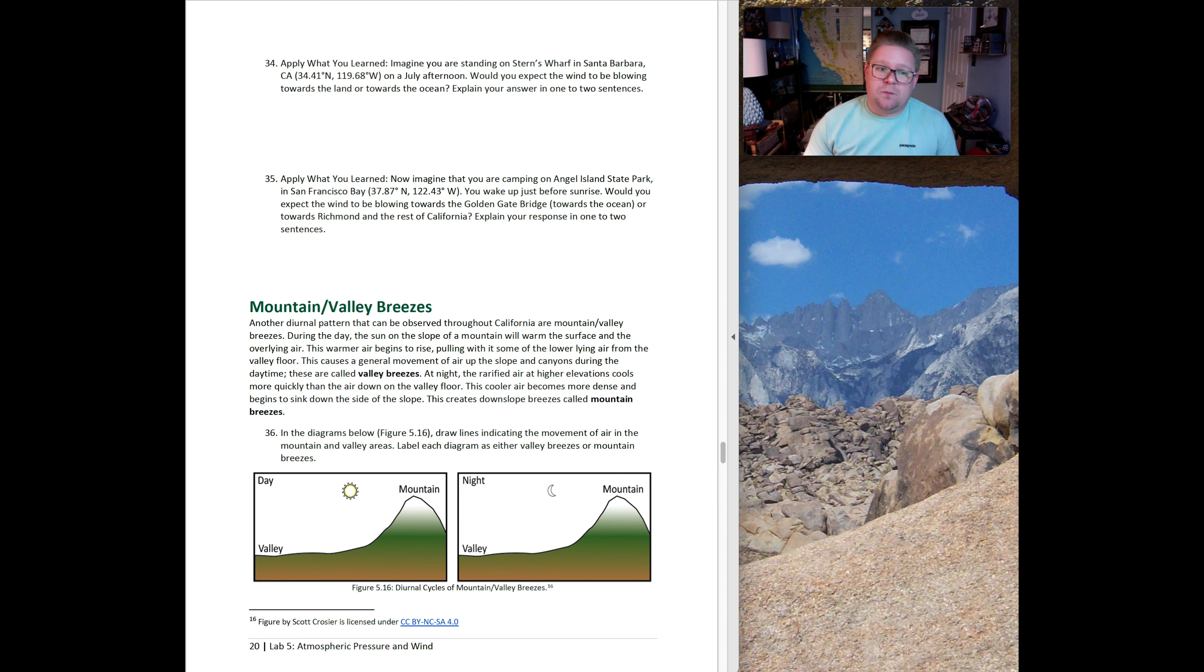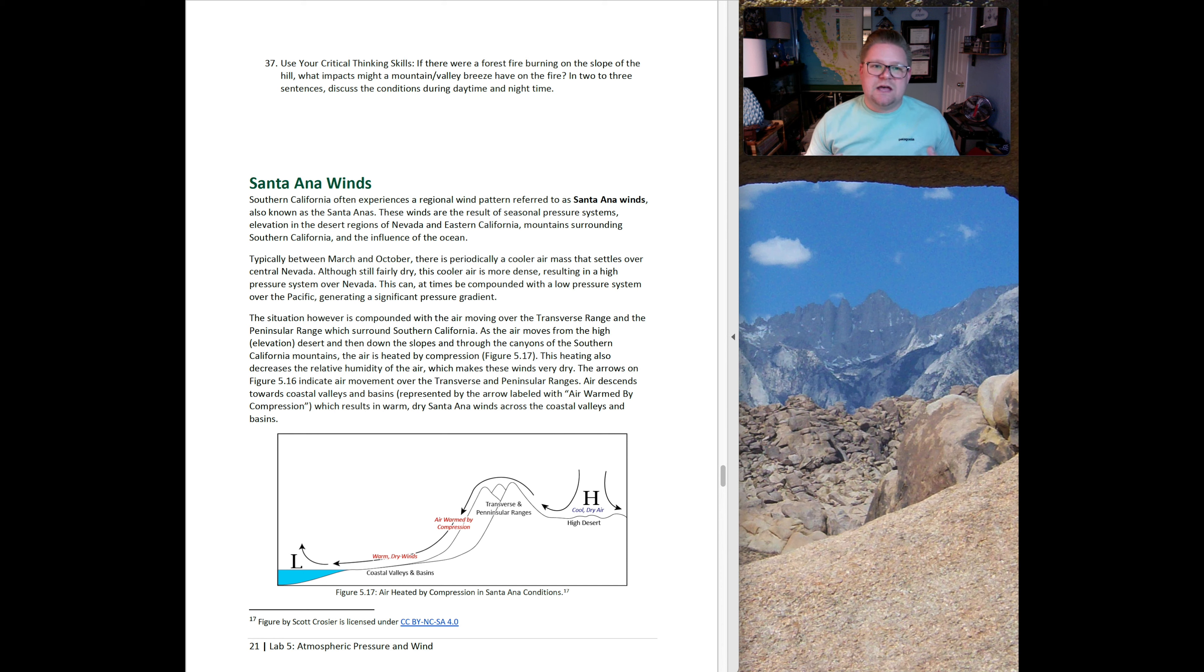Other types of local winds we can talk about are mountain valley breezes. During the day, the sun on the slopes of the mountain will warm the surface and the overlying air. The warmer air will begin to rise, pulling with it some of the lower air from the valley floor. This causes a general movement of air up the slope and canyons during the daytime. These are called valley breezes. At nighttime, the air will cool, become more dense, and will begin to sink, which will then create mountain breezes. Question 37 says, if a fire was burning on the slope of a hill, what impacts might a mountain valley breeze have on that fire?